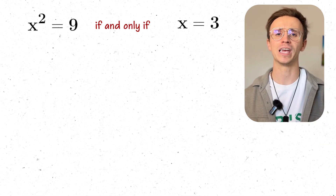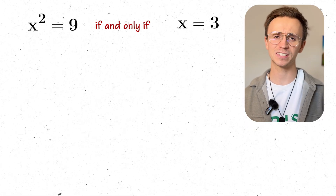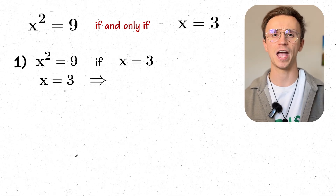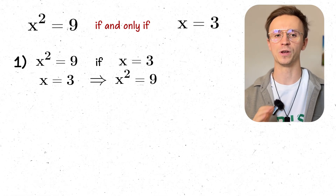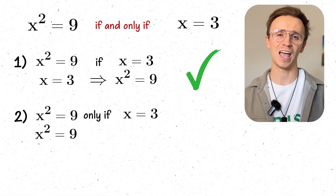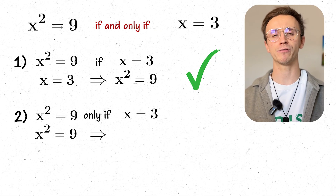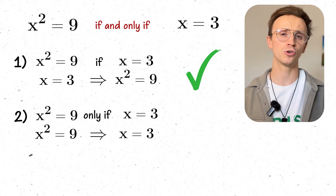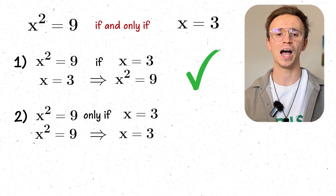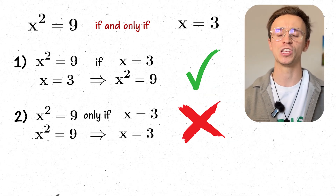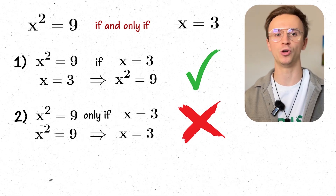Now consider the statement: x² = 9 if and only if x = 3. Is this correct? Start by assuming x = 3 — it's easy to show x² = 9, so x² = 9 if x = 3. But what about the reverse? If we assume x² = 9, do we definitely get x = 3? Taking square roots of both sides gives x = ±3. So we don't know x definitely equals 3 — there are two solutions. Therefore it is not a correct if and only if statement; it is a correct if statement but not if and only if.